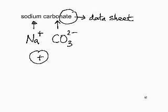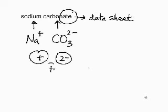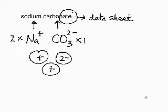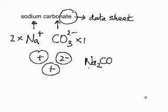We have a single positive ion and a double minus ion. To balance this, we need another positive ion, so we take the sodium times 2 and the carbonate times 1. Make sure you put the 2 in the correct place. We need 2 sodiums, so it's Na₂CO₃.